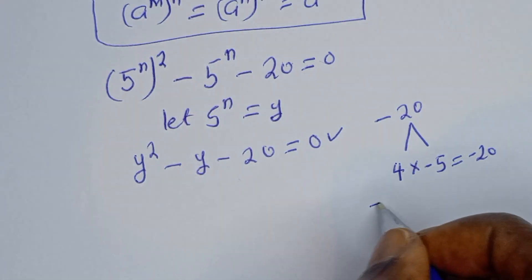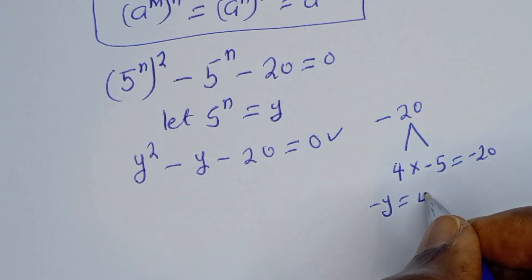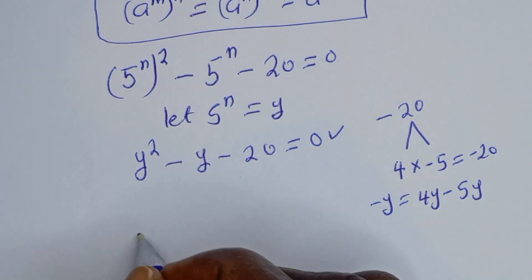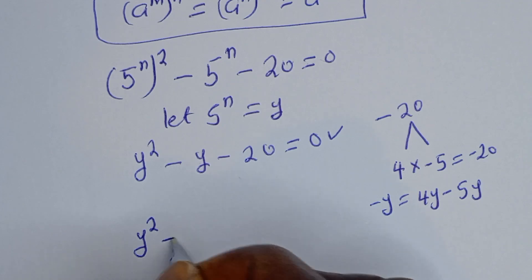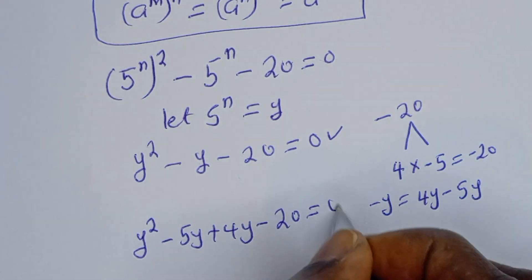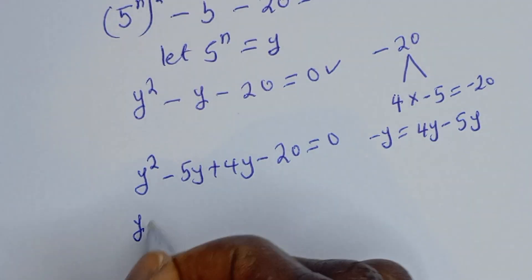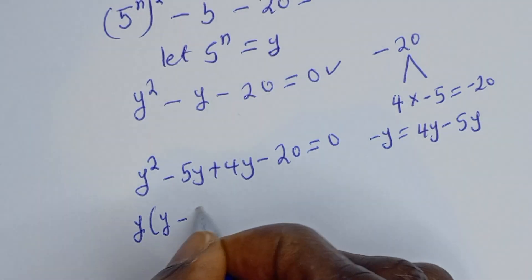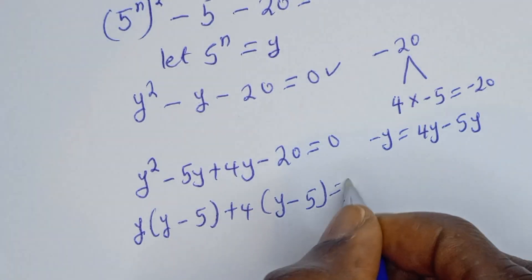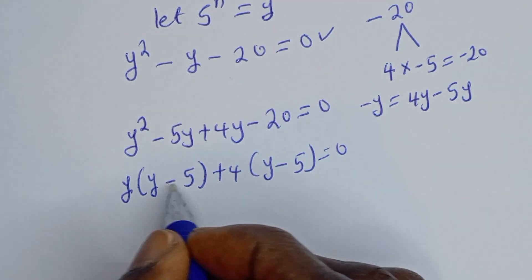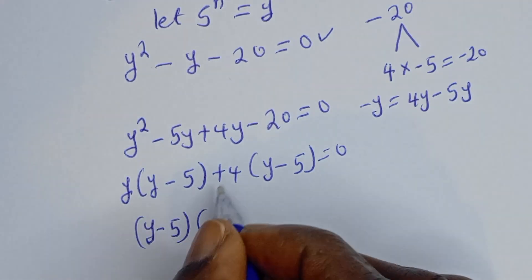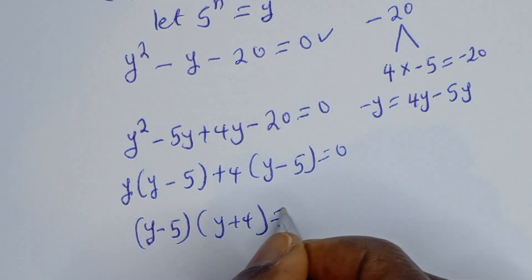Then minus y equals 4y minus 5y. Now let's substitute here. We have y squared minus 5y plus 4y minus 20 is equal to 0. Then y is common here: y bracket y minus 5, plus 4 bracket y minus 5, is equal to 0. Then y minus 5 is common, giving y minus 5 bracket y plus 4 is equal to 0.